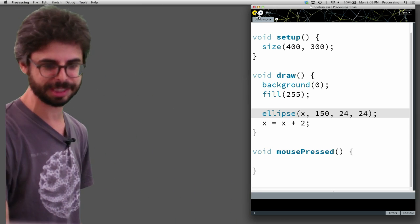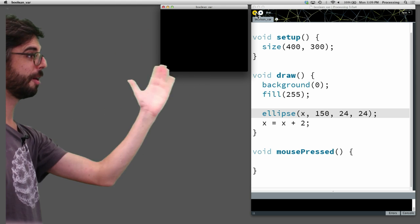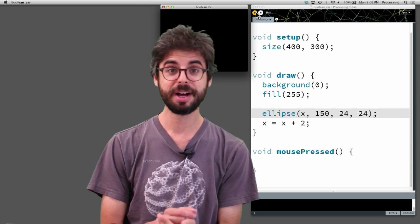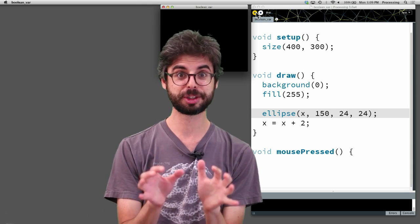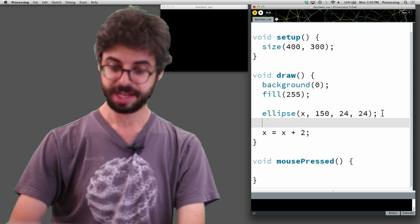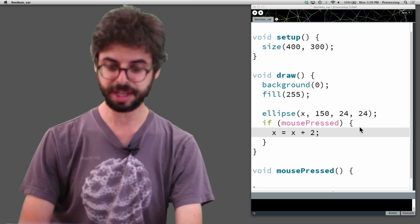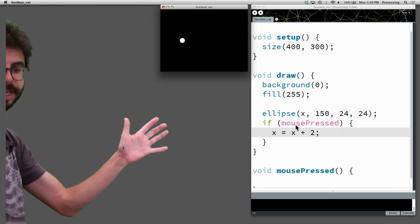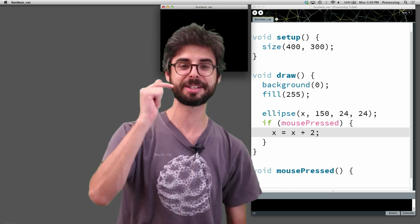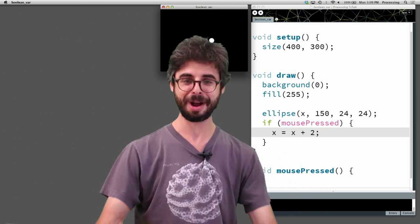Here is a very simple example. It has a circle moving across the screen. Size, background, an ellipse drawn at x, x equals x plus 2. What if I don't want this circle to start until I click the mouse? Well, you might think I would do something like if mousePressed and run this, and now the circle's not moving. If I click the mouse, it's moving. If I let go of the mouse, it's stopped. But what if I want just the event of clicking the mouse to trigger the circle to move from now and forever going forward?